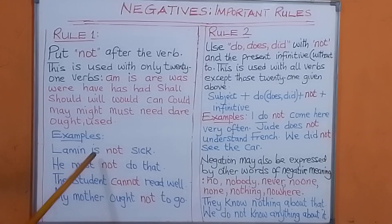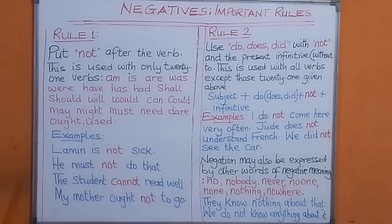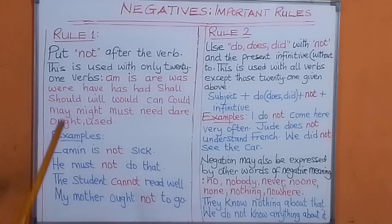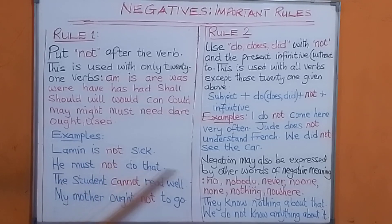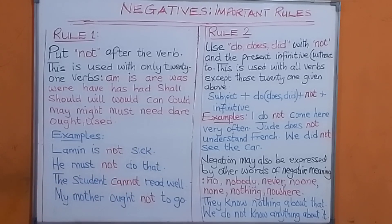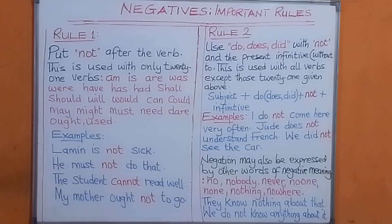Look at the examples. 'Lamin is not' — look at the verb 'is', and after that we put 'not' to make that sentence negative. 'Lamin is not sick.' That means the sentence is negative. Number two: 'he must not' — look at 'must'; we put 'not' after the verb 'must' to make the sentence negative. 'He must not do that.' Look at the next one: 'The student cannot read well.'